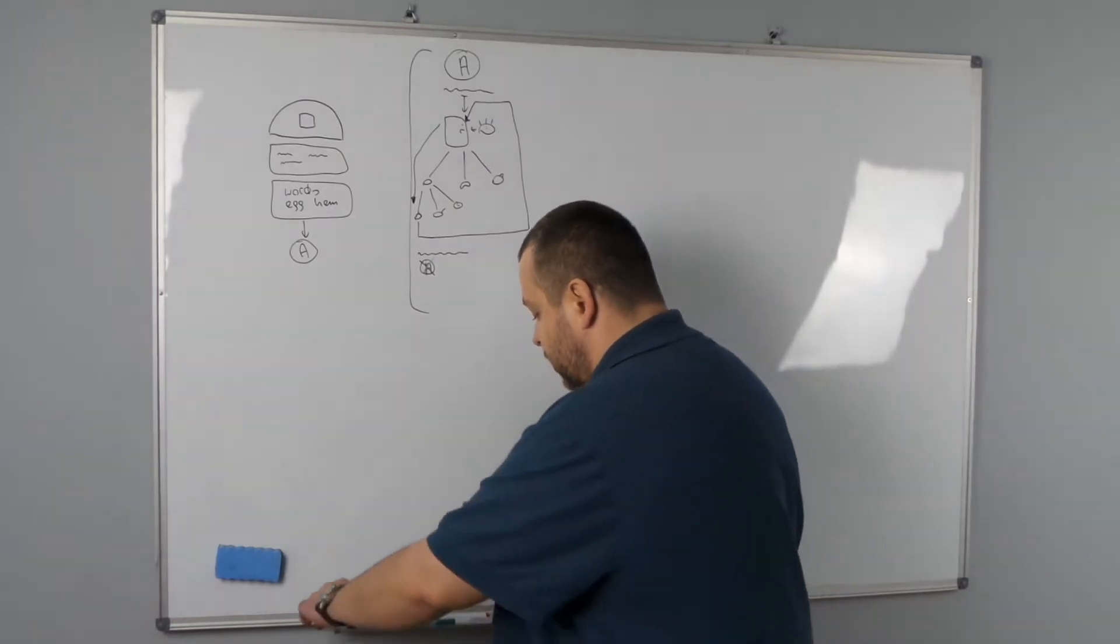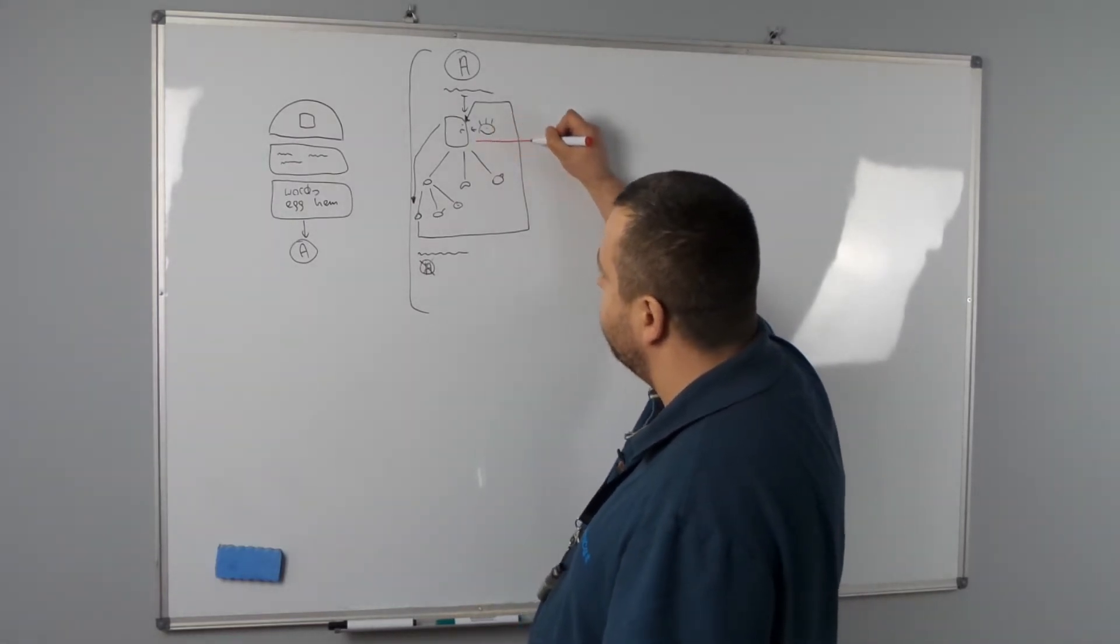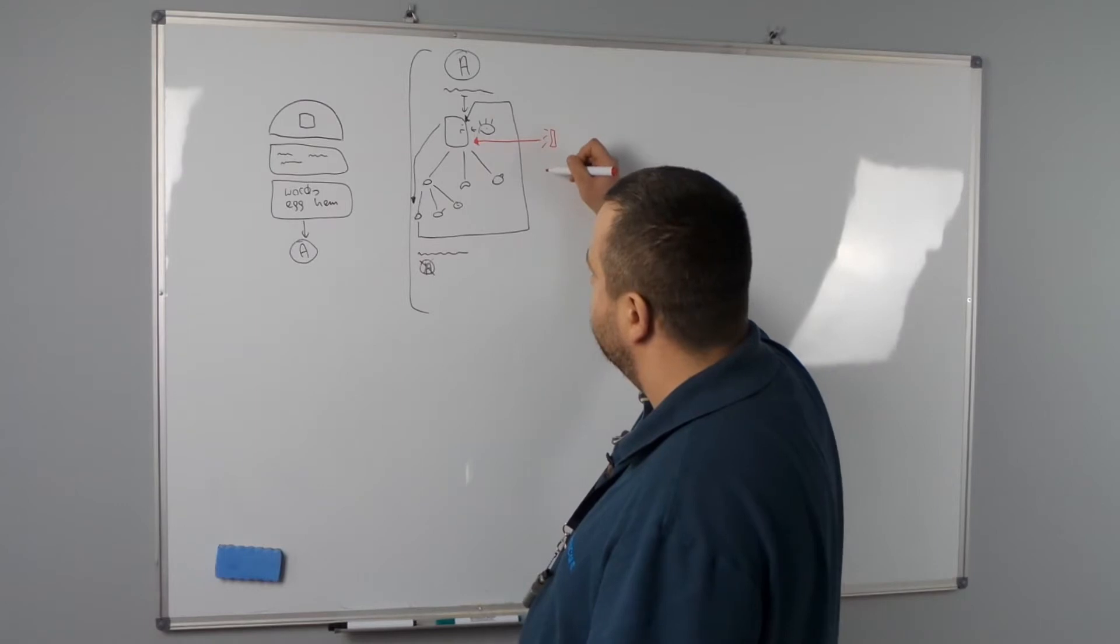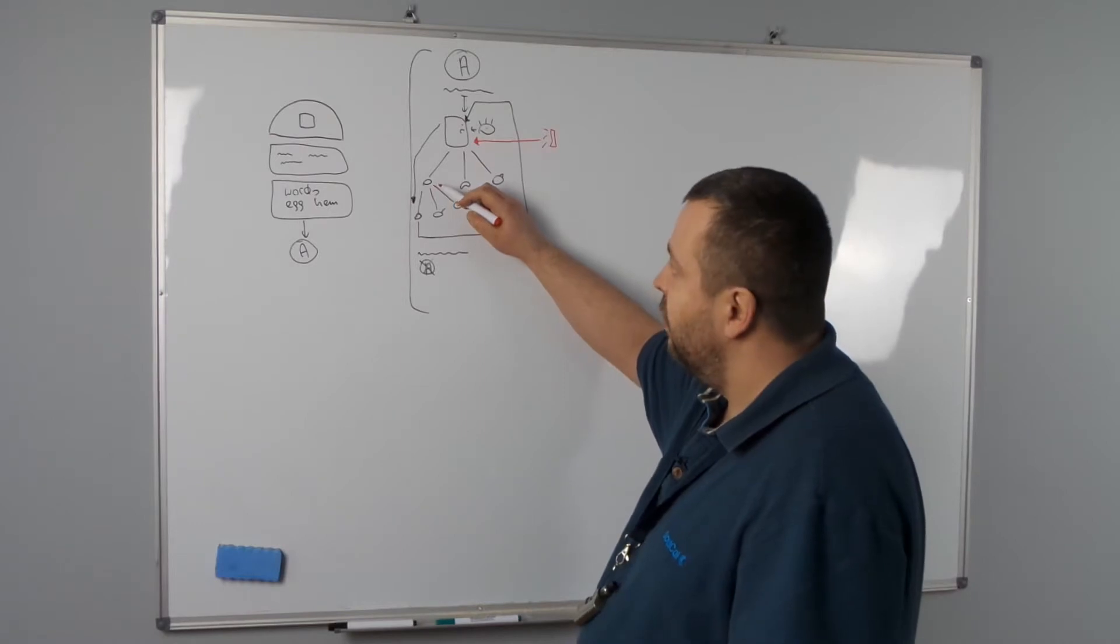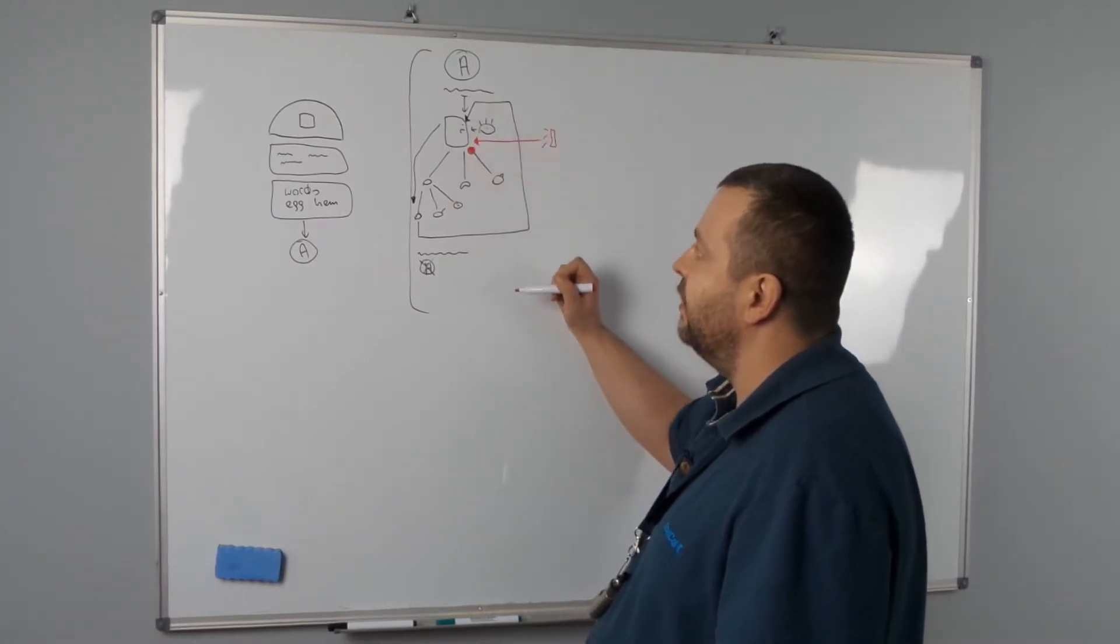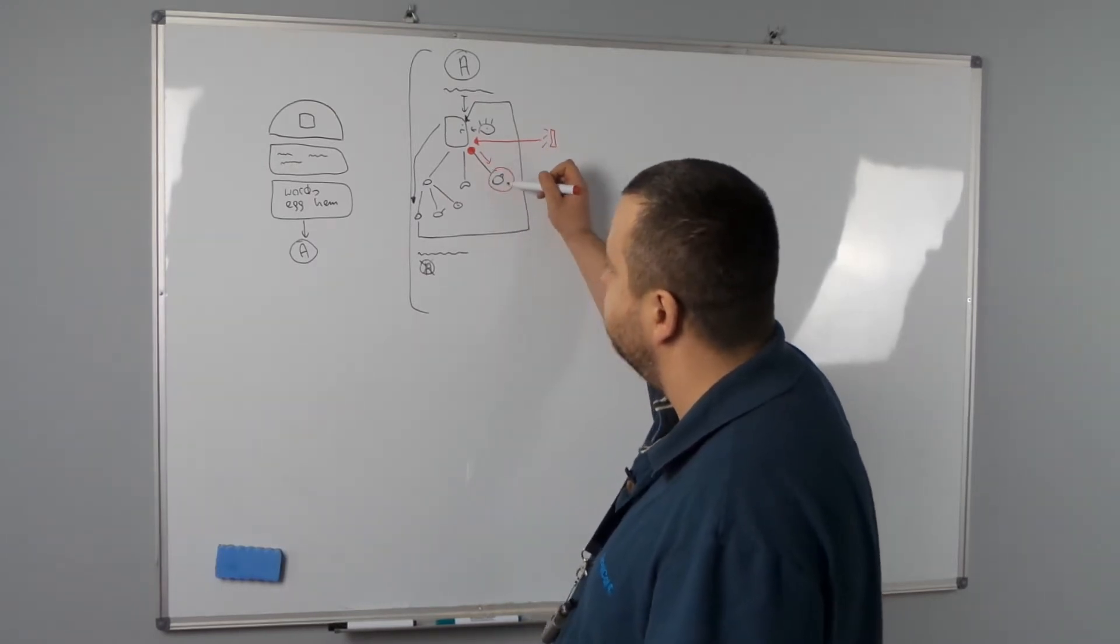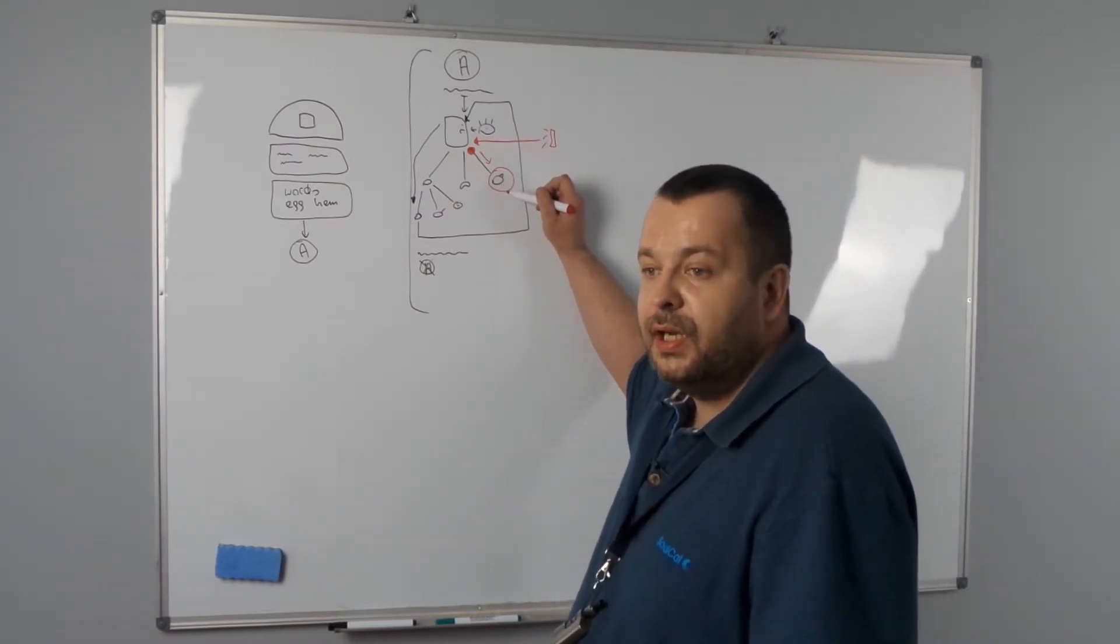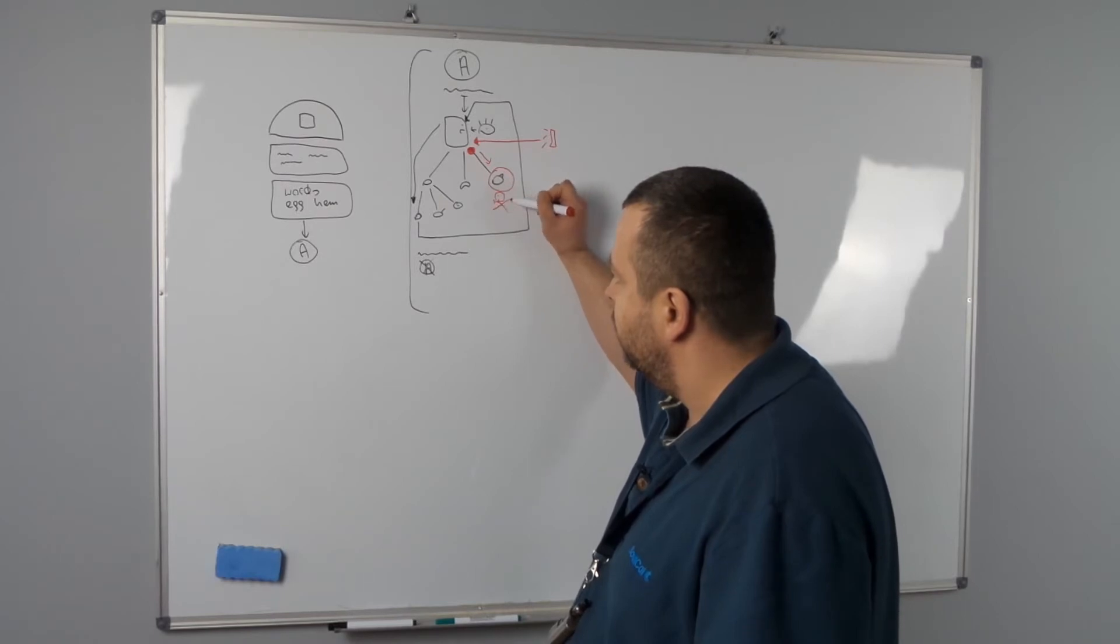But what happens if for example our thinking and behavior is altered here by the psychotronic weapons and its operators. We wanted to choose egg but the thought of taking ham instead appeared in our mind. And this way we chose ham. But the ham could have been bad, could have been poisoned and could have been unhealthy for us. So it could have been a danger in some way.